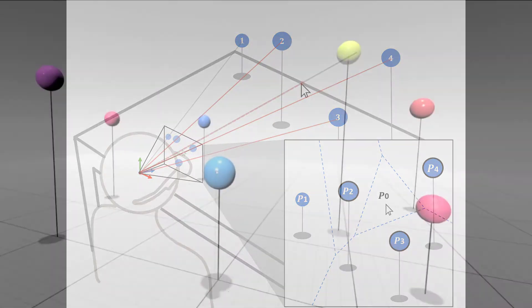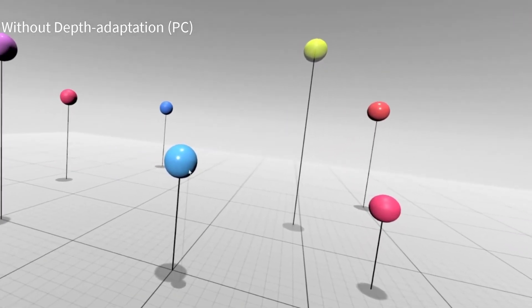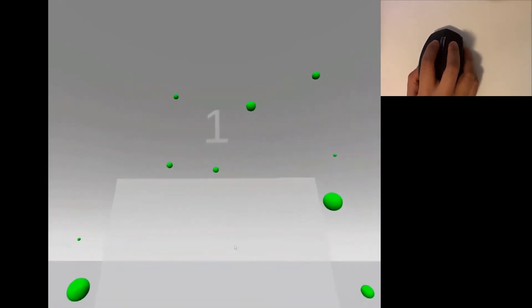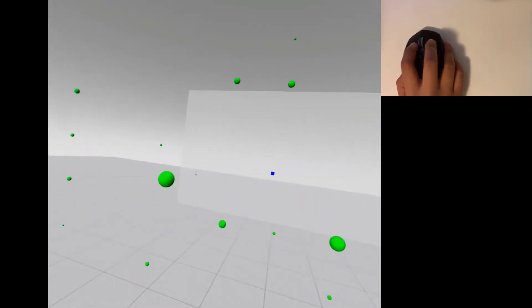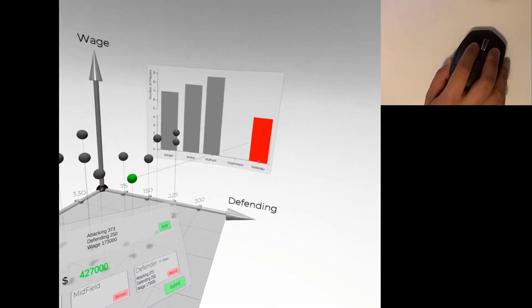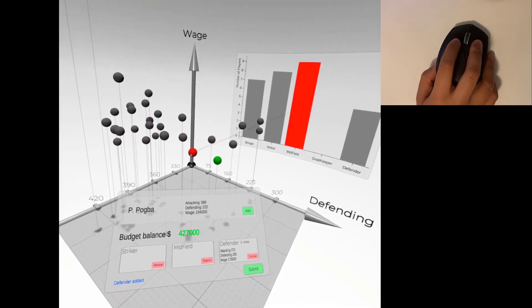We evaluate the Depth Adaptive Cursor by comparing it to an existing approach without depth adaptation, using a 3D pointing task that requires users to select between a 2D plane and 3D objects, and a data analysis task that requires users to analyze 3D scatter points in a virtual workspace.